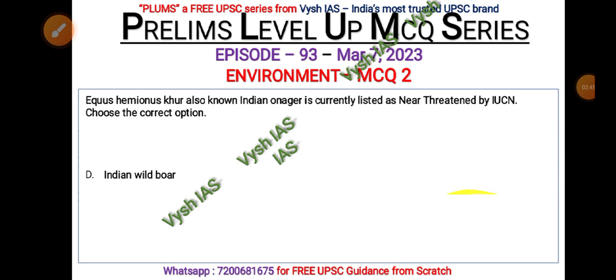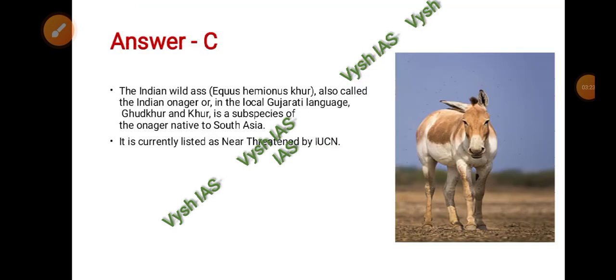The second MCQ: Equus hemionus khur — also known as Indian onager — is currently listed as a near threatened species by the IUCN. Which species are we talking about, and what is its popular name? Your options are: Indian wild buffalo, Indian gazelle, Indian wild ass, or Indian wild boar. Pause the video and answer.